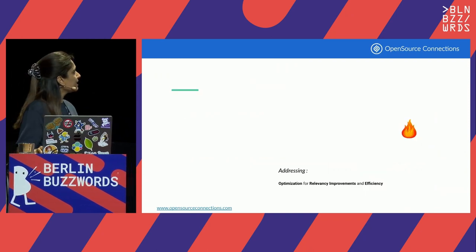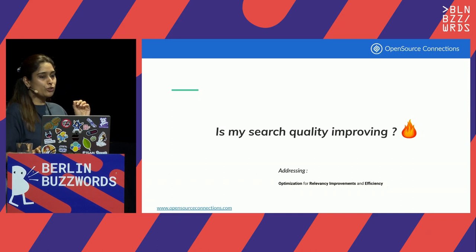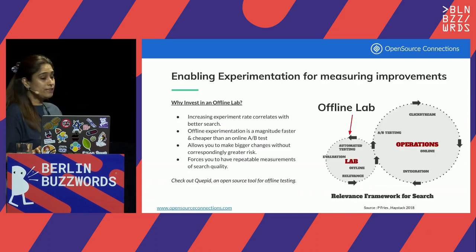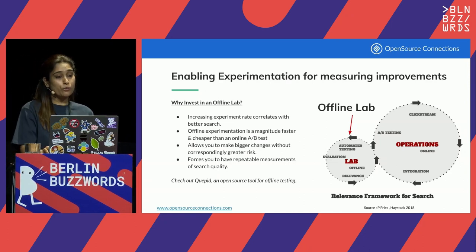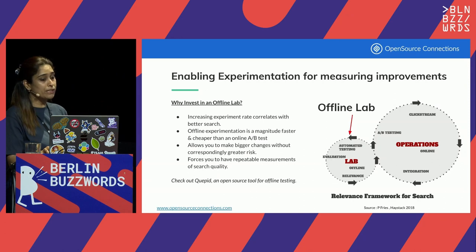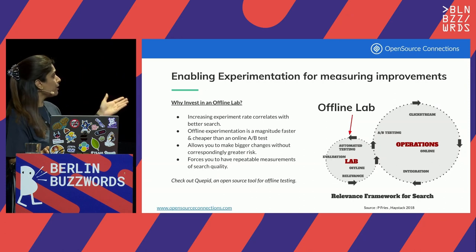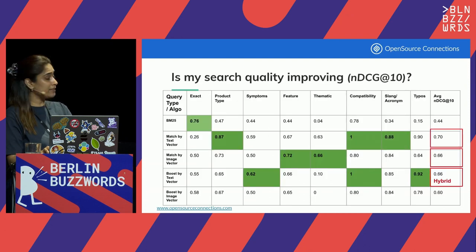The third part addresses optimization for relevancy improvement and efficiency, which is absolutely required to address the burning question: is my search quality really improving using vectors? In the long run, we cannot really rely on LGTM or personal hunches. We need a methodology that is proven and repeatable, to ensure we avoid bigger risks and can conduct experiments in a more controlled environment before putting them online. We recommend you check out Quepid, which is a great tool to help you put a metric on your improvements and help with better decision-making about whether vectors are the right choice for you.